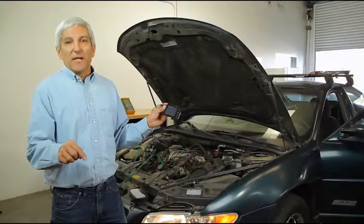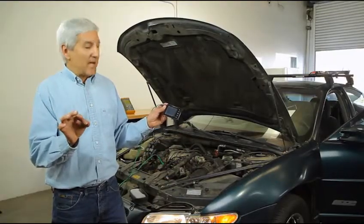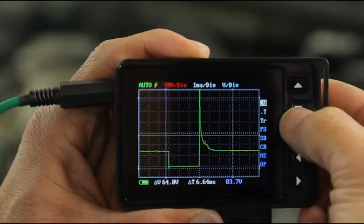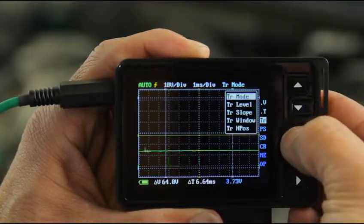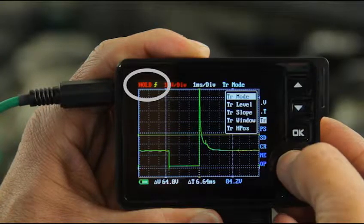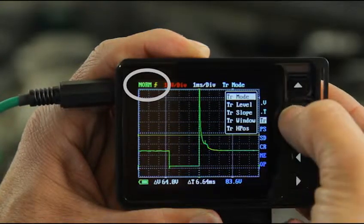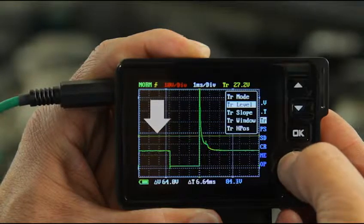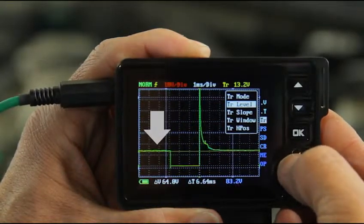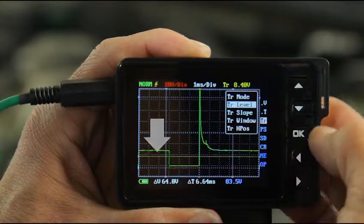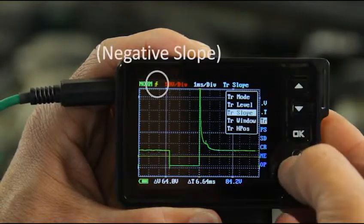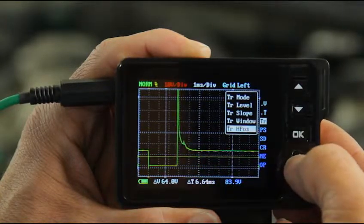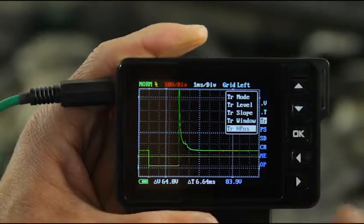Now, we can take it to another step. I'm going to go ahead and fine tune it now. I'm going to hit the OK button to bring up the menu, and I'm going to go to TR which stands for trigger. Hit my left right arrow keys to go to normal. I'm going to go to trigger level. I'm going to bring my trigger level down by hitting my left arrow key. I'm going to trigger slope, and I'm going to change it to positive slope. One more adjustment is I'm going to set my trigger horizontal position to the left.